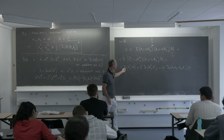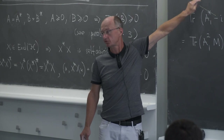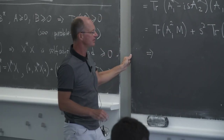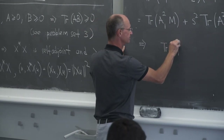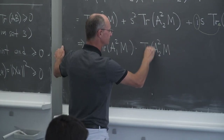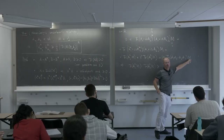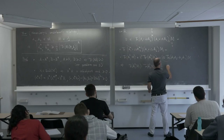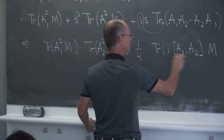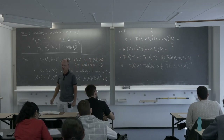From high school (or secondary school) we know that for a non-negative quadratic polynomial in s, the product of the leading and constant coefficients is bounded from below by one-quarter of the square of the linear coefficient. So we obtain the inequality: Tr(A₁² · m) · Tr(A₂² · m) ≥ (1/4)|Tr([A₁, A₂] · m)|².